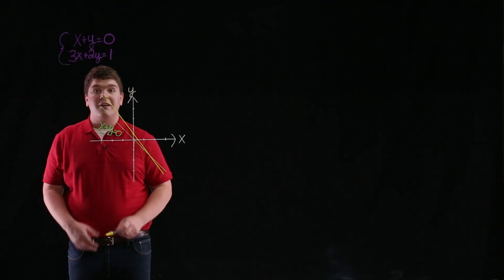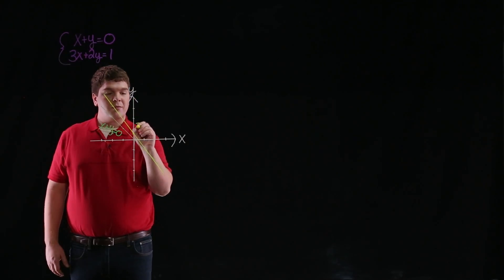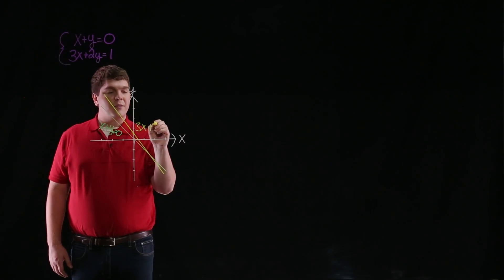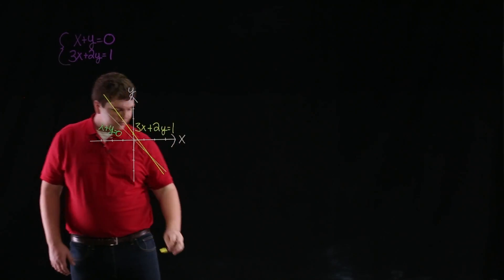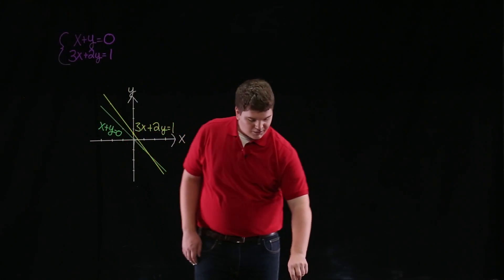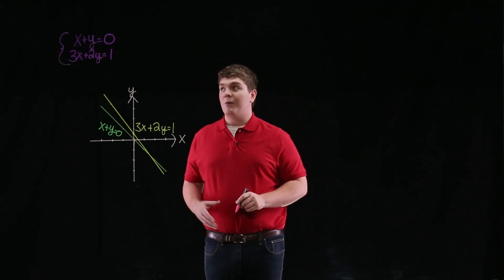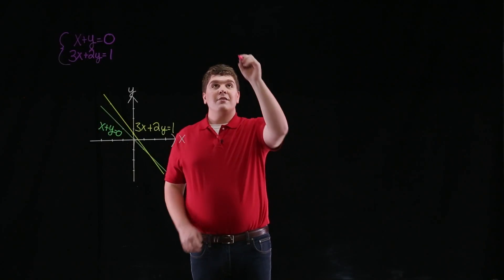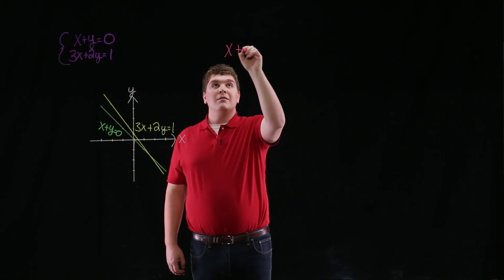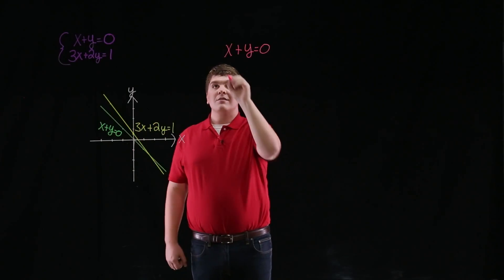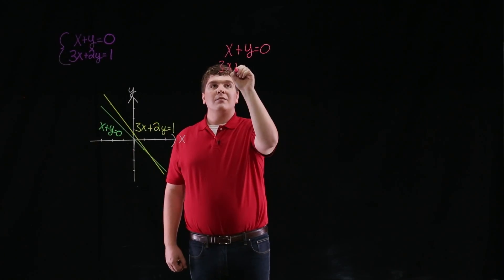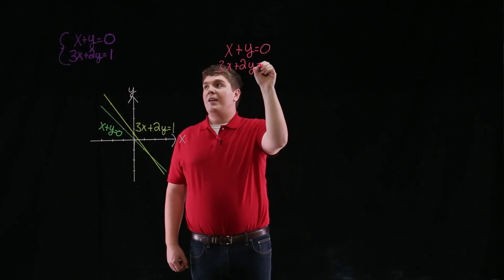Which then means that the yellow line is the graph of the equation 3x plus 2y equals 1. Now, to solve the system of equations, we'll begin by considering the equation x plus y equals 0, and the equation 3x plus 2y equals 1.